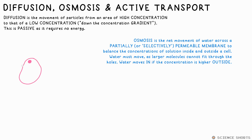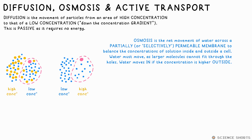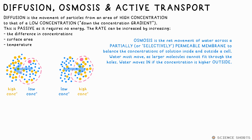Osmosis is the name specifically given to the movement of water across such a membrane. For example, if there's a higher concentration of glucose outside a cell, the glucose can't diffuse in to balance the concentration, so instead the water moves out of the cell, resulting in a decrease in its mass. The rate of diffusion and osmosis can be increased by increasing the difference in concentrations, increasing the temperature, or increasing the surface area of the membrane. This is why the villi cells in your small intestine are lumpy, as well as alveoli — the air sacs in your lungs — and root hair cells. They all have a very high surface area to volume ratio.